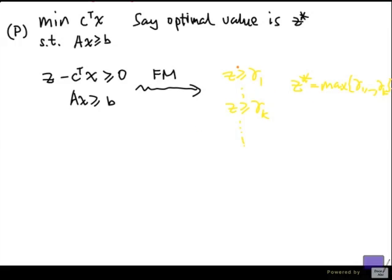Now what does that mean? If you look at the operations that we are allowed to perform in the Fourier-Motzkin elimination, it basically is just taking non-negative linear combination of these original inequalities. In other words, the inequality that finally says z greater than z star in this final system can be written as a linear combination of the original inequalities using non-negative scalars.